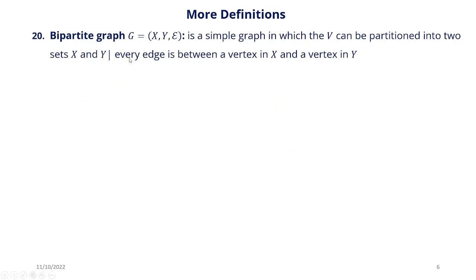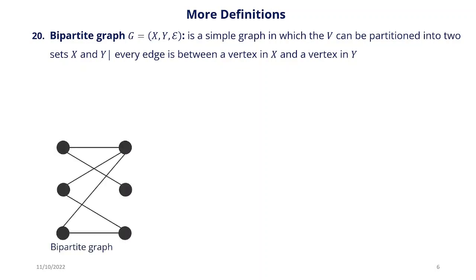A bipartite graph G = (X, Y, E) is a simple graph in which the vertices can be partitioned into two sets, X and Y, such that every edge is between a vertex in X and a vertex in Y. Here we have a graph with six vertices partitioned into two sets. The vertices in X are not connected to each other, and the vertices in Y are not connected to each other — the only edges connect vertices between the two sets.